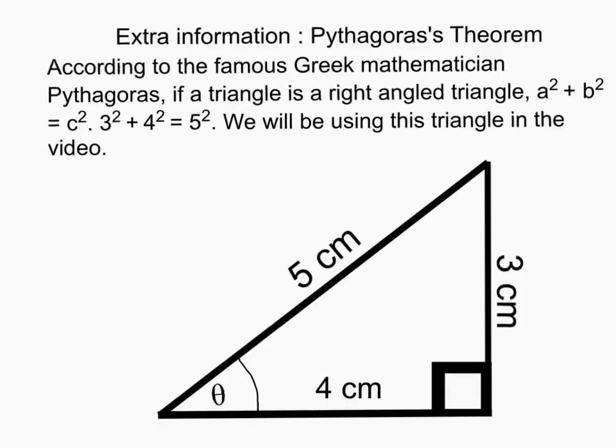Pythagoras theorem. According to the famous Greek mathematician Pythagoras, if a triangle is a right angle triangle, a squared plus b squared equals c squared. C is the hypotenuse and a and b are the other sides. As shown in this triangle, 3 squared plus 4 squared equals 5 squared. We'll be using this triangle in the video.